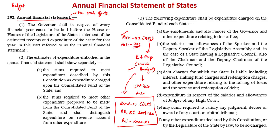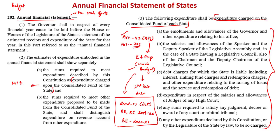Certain state legislatures have a single house while others have two houses including the legislative council. The estimates of expenditure shall show two things separately: sums required to meet expenditure charged upon the consolidated fund of the state, and other expenditure. Clause 3 of Article 202 prescribes the expenditure charged upon the consolidated fund. This charged expenditure shall not be submitted to the vote of the state legislative assembly — it is non-votable — though the assembly may discuss these estimates.